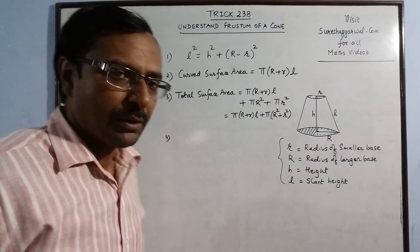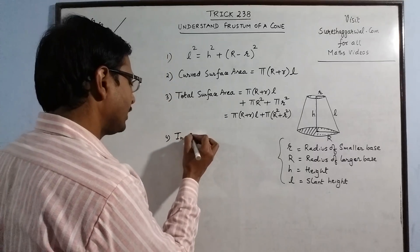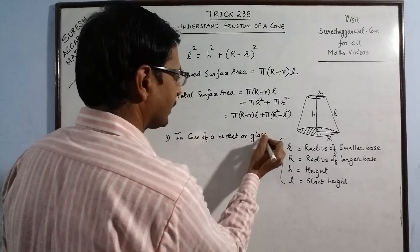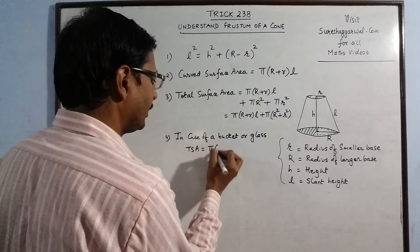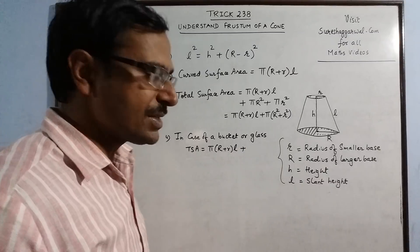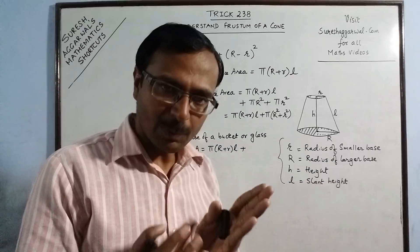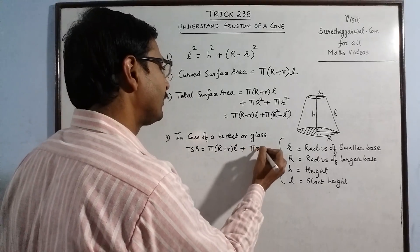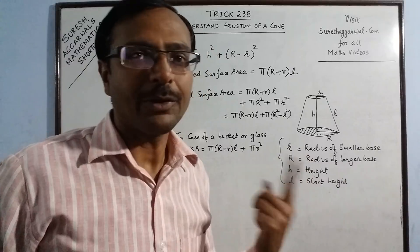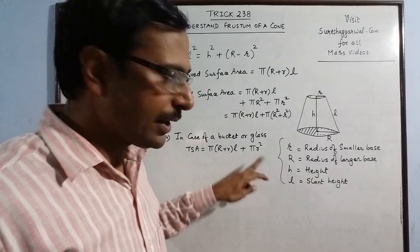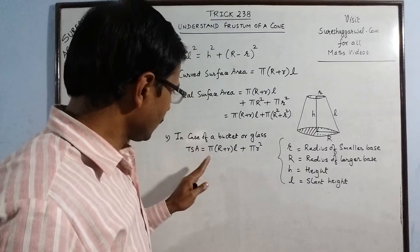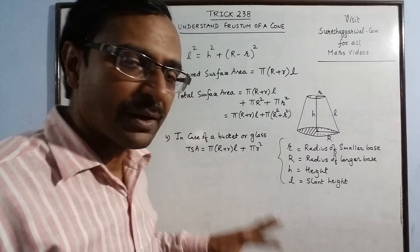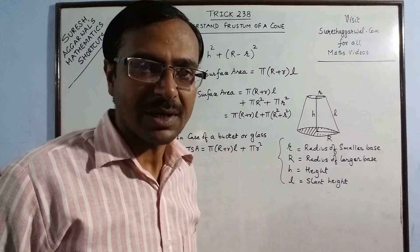One important thing to remember: in the case of a bucket or a glass, the TSA formula changes slightly. A glass is smaller at the base and open at the top. So you include the curved surface area π(R + r)L but add only the area of the smaller base, since it is open at the top. This requires a little understanding, because these formulas are not just crammed — they are applied based on understanding of the question being asked.